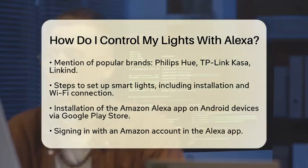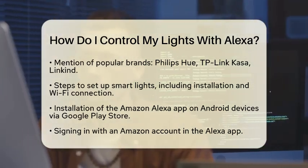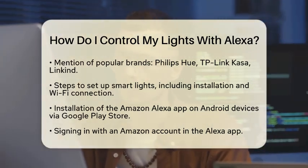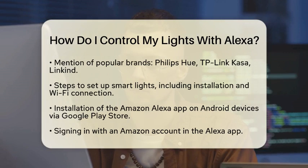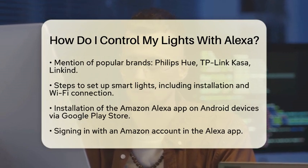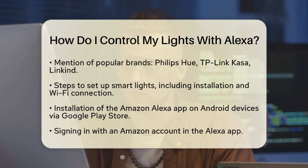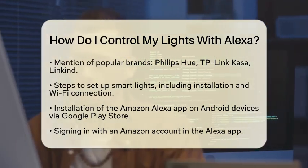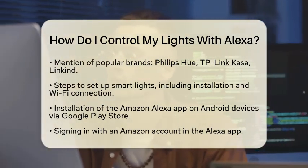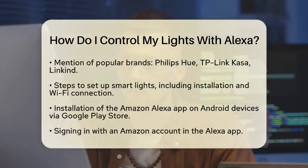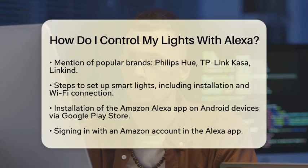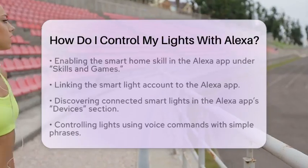After installing the app, you need to enable the smart home skill. In the Alexa app, navigate to the Skills and Games section. Search for the skill related to your smart light brand, such as Philips Hue or TP-Link Kasa. Enable the skill and link it to your smart light account.